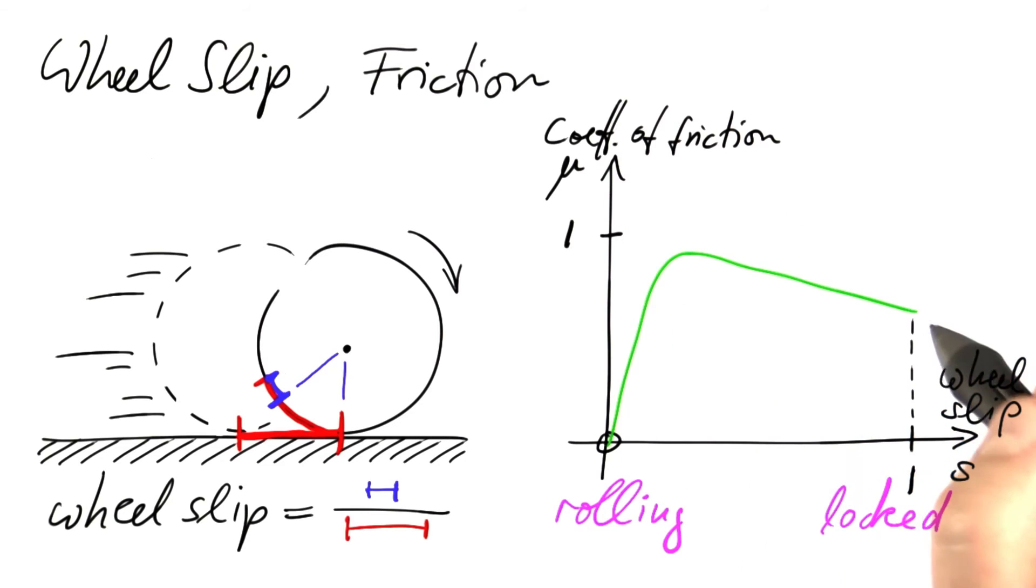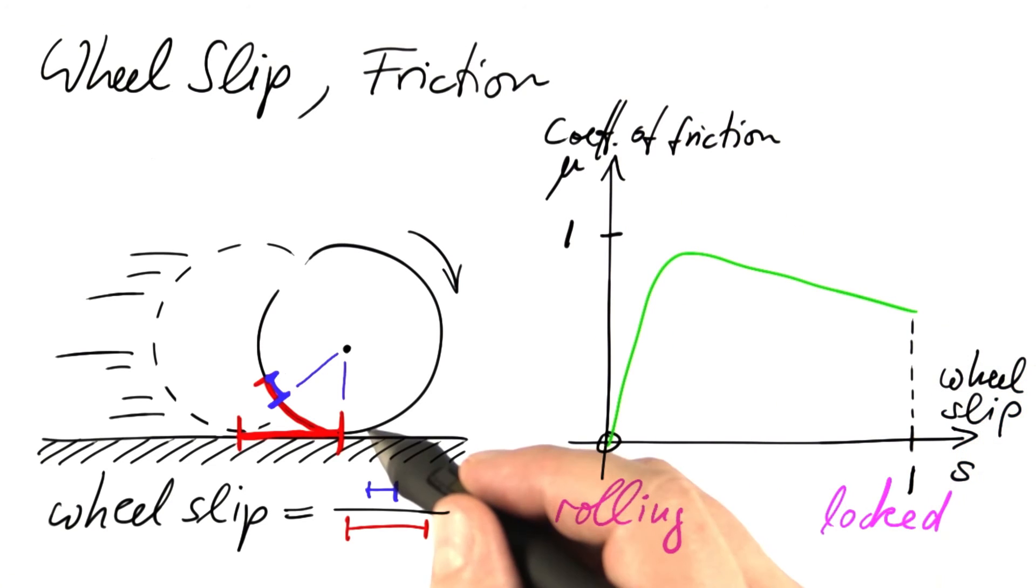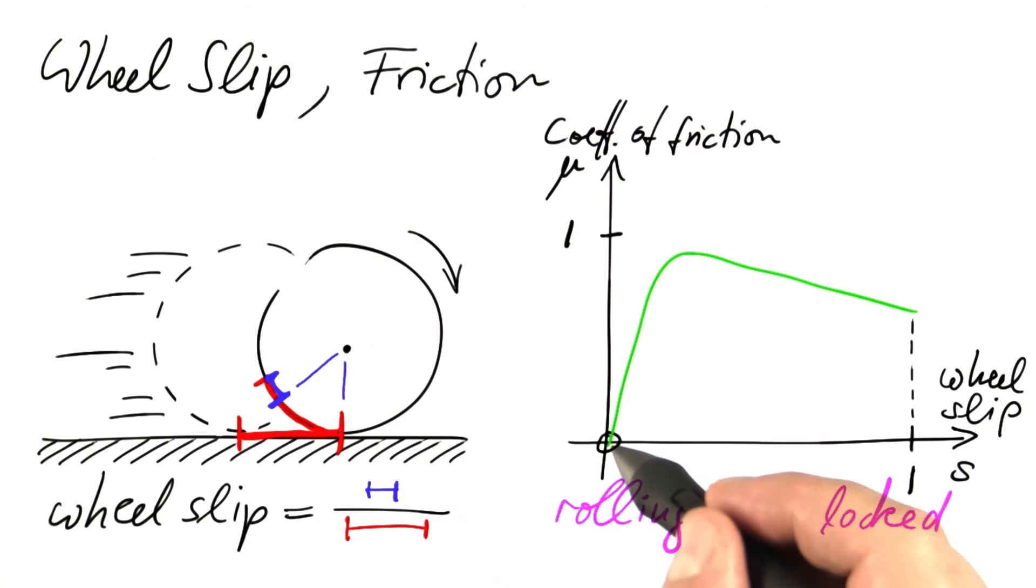The coefficient of friction will be less than optimum. If the wheel slip equals zero, the wheel is rolling perfectly and the car only experiences the rolling friction, which is so small that we neglect it here and simply set the friction to zero.